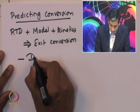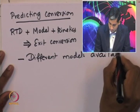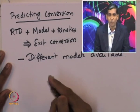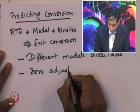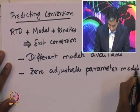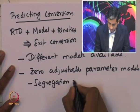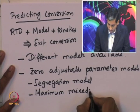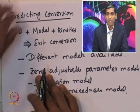There are different models available. In the next couple of lectures we are going to look at zero adjustable parameter models. These are essentially two types: the first one is called the segregation model, and the second one is the maximum mixedness model. We are going to look into the details of these two types of models to predict the conversion of a real world reactor.